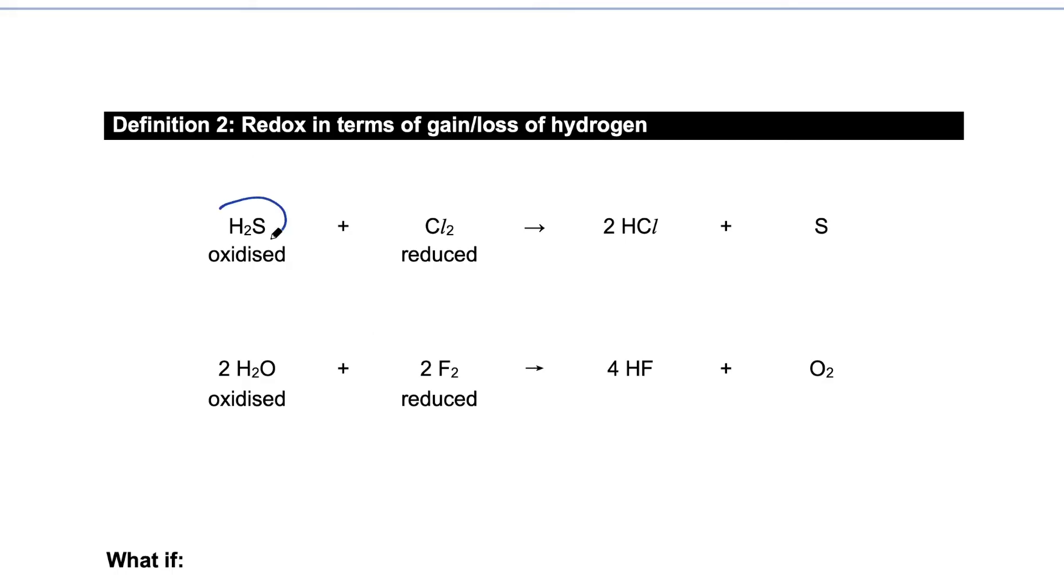Looking at hydrogen sulfide becomes sulfur and from water becoming oxygen, the hydrogen is being lost. So oxidation refers to the loss of hydrogen. And if you look over on this column, Cl2, chlorine to hydrogen chloride, it seems that the substances have gained hydrogen over here. So reduction is the gain of hydrogen. So this can be another way we can decide whether a substance is being oxidized or reduced.